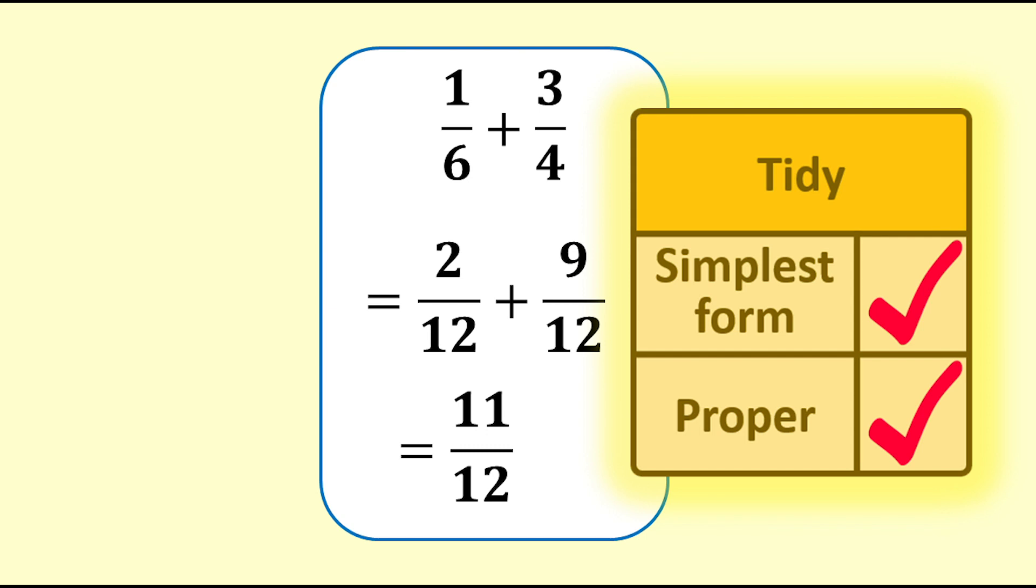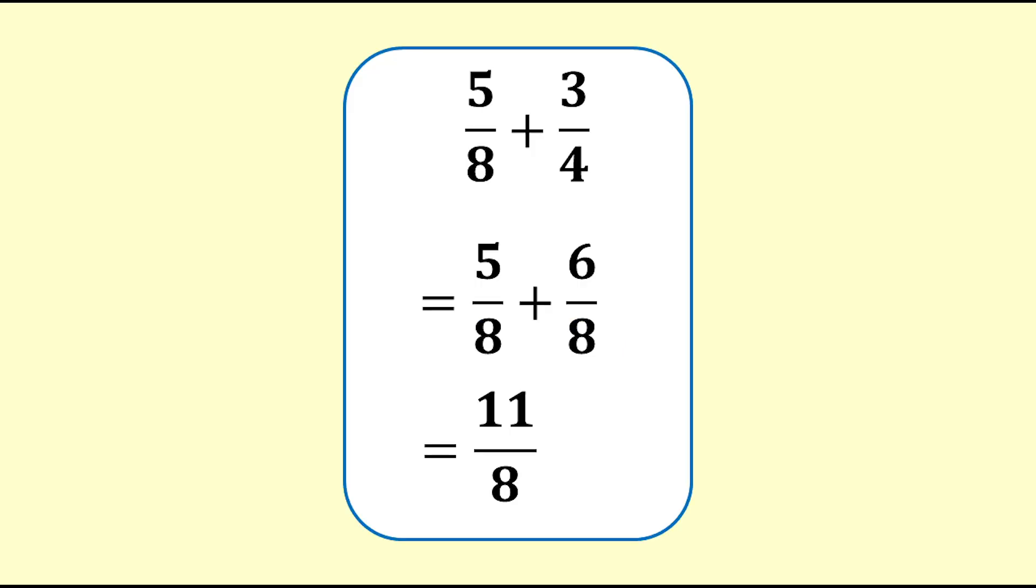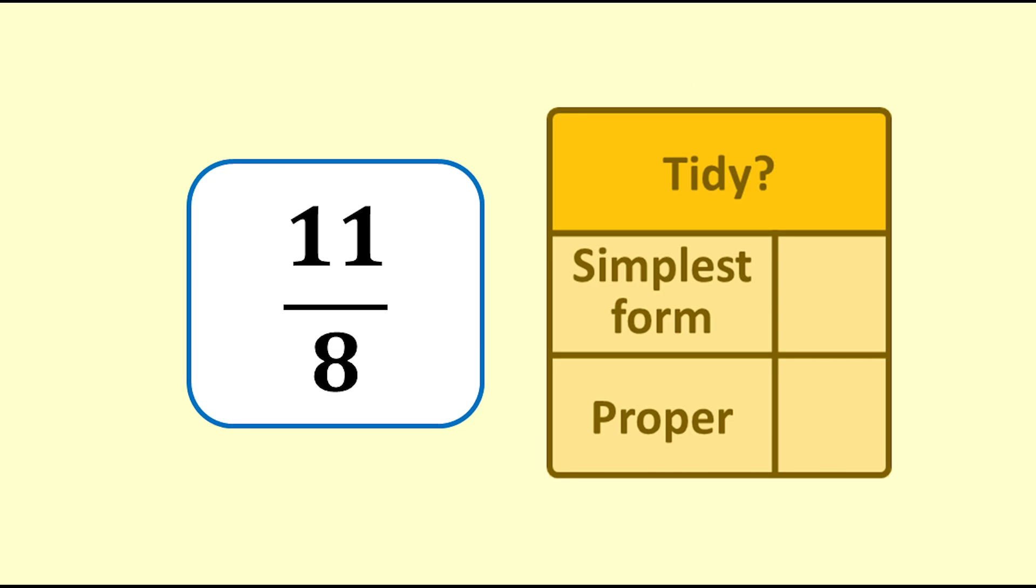I will do two more examples and then give you some to practice on. Example 4, 11 eighths. 5 eighths plus 3 quarters equals 11 eighths. Is 11 eighths tidy? It is in simplest form, as there is no number that goes into 11 and into 8. But it is an improper fraction, as 11 is greater than 8.